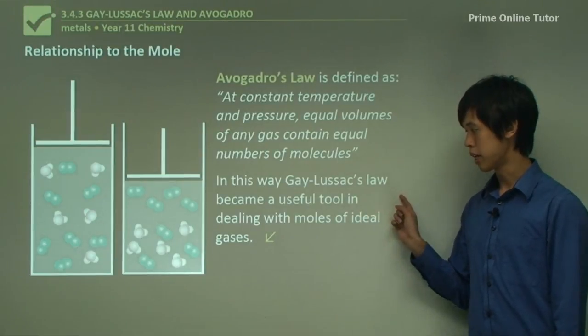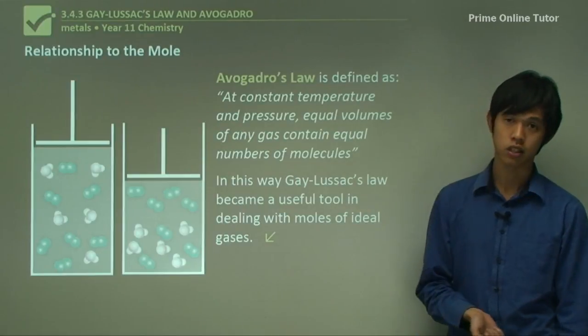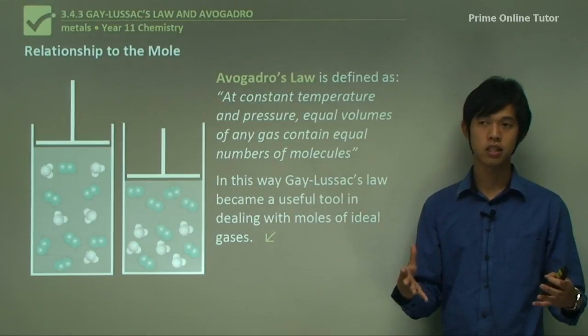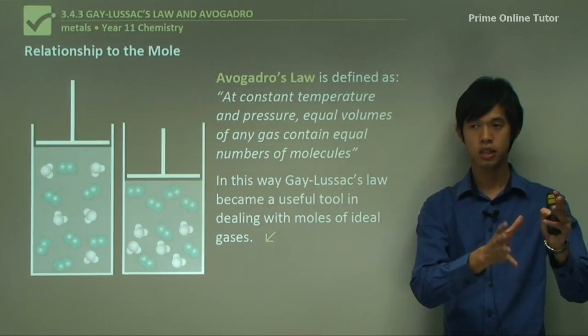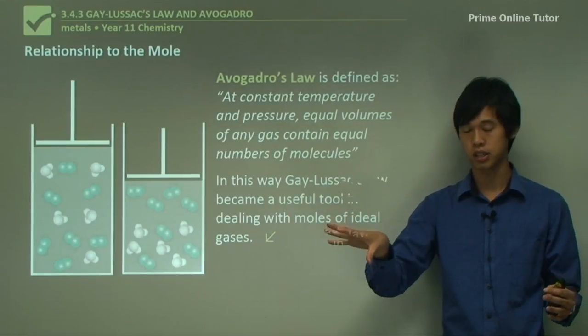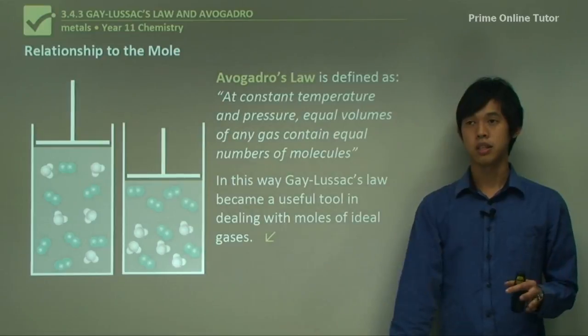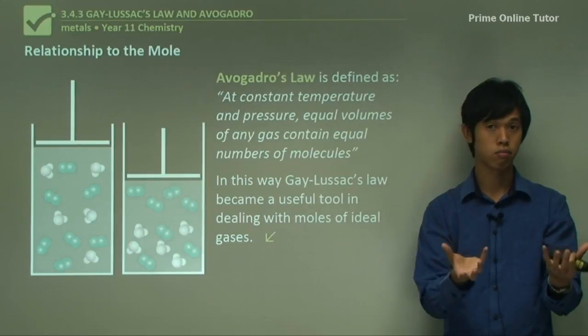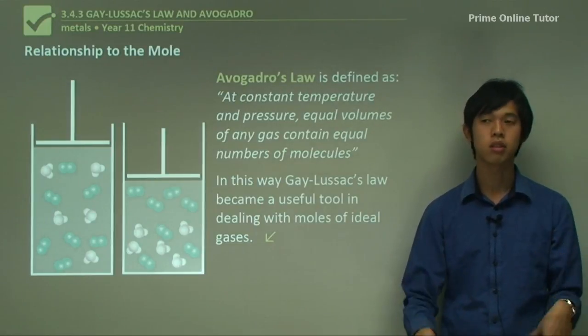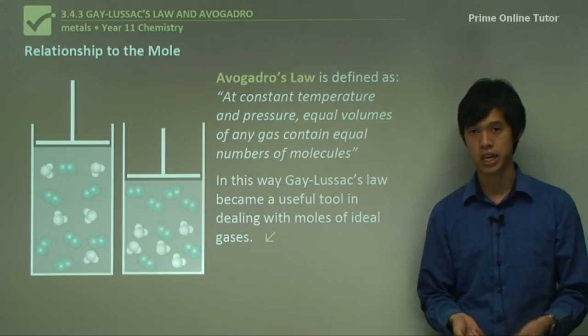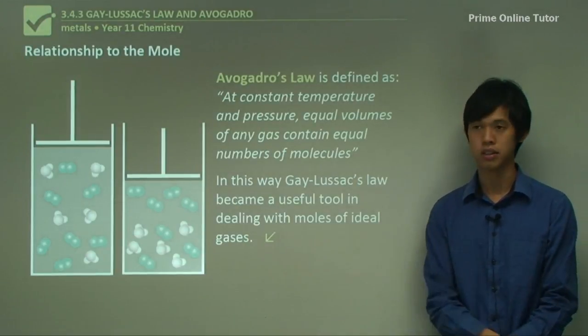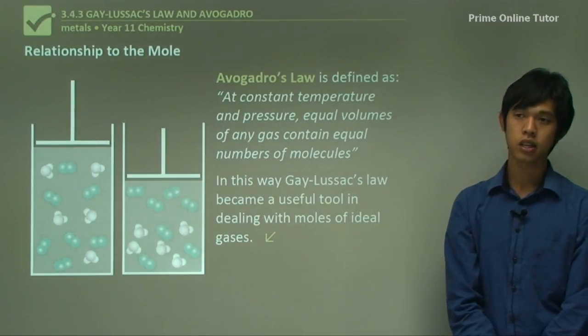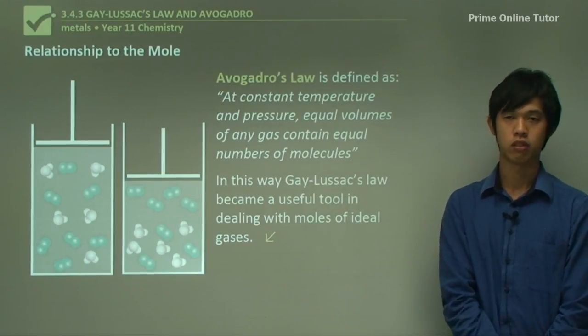In this way, Gay-Lussac's law became a useful tool in dealing with moles of ideal gases. The cool thing now is that Gay-Lussac basically said, look, these volumes of gases, if we get them right, then we can predict how much of the product is going to come out. And what that means is, well, from Avogadro's law, it says that the volume is directly related to the number of moles. So now, we've developed a mole concept based on volume, rather than mass, from what we did before. So this is how Gay-Lussac helped to progress chemistry and combine it with Dalton's atomic theory to give a more complete representation of what's happening in chemistry.